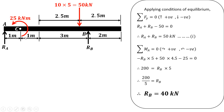There is an external moment of 25 kN·m acting in the anticlockwise direction, so that is negative. So 50 into 4.5 minus 25 equals 200. Transferring the minus RB into 5 term to the other side it becomes positive, so RB equals 200 divided by 5, that is 40 kN.